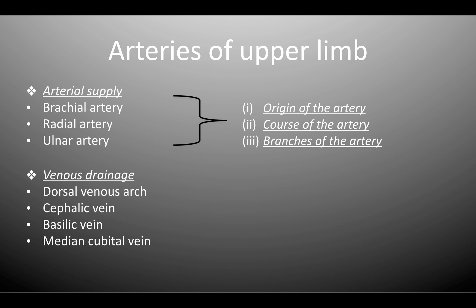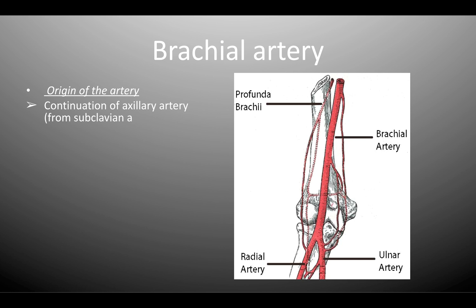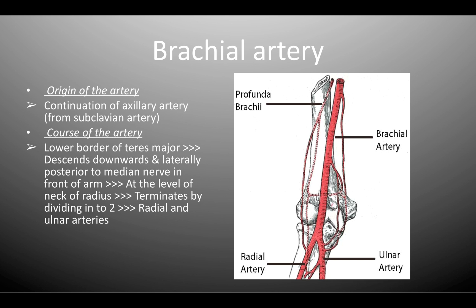First up, the brachial artery. This artery is basically the continuation of the axillary artery, which comes from the subclavian artery. The axillary artery converts into the brachial artery at the lower border of teres major, and then the brachial artery descends downwards and laterally, posterior to the median nerve, in front of the arm. At the level of the neck of the radius, it terminates by dividing into its two terminal branches: the radial and the ulnar arteries.